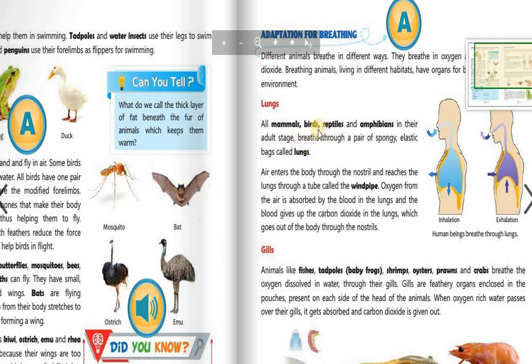All mammals, birds, reptiles, and amphibians in their adult stage breathe through a pair of spongy elastic bags called lungs. Air enters the body through the nostrils and reaches the lungs through a tube called the windpipe. Oxygen from the air is absorbed by the blood in the lungs, and the blood gives up carbon dioxide which goes out of the body through the nostrils.